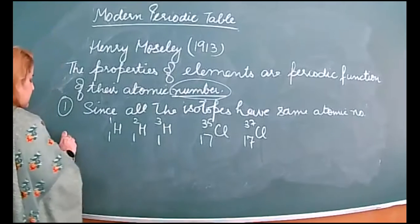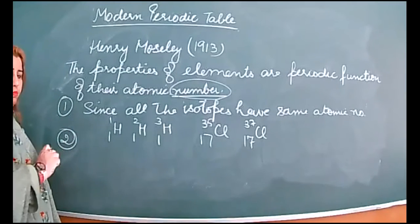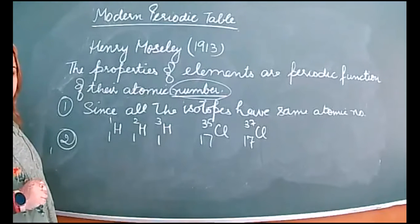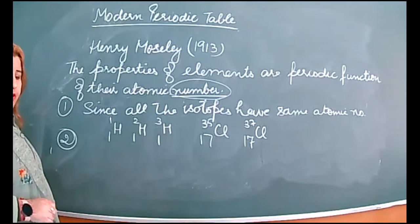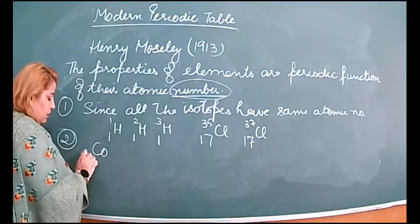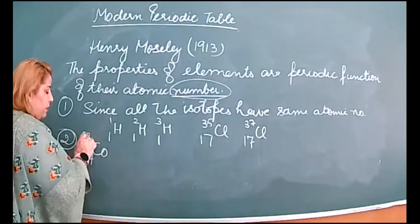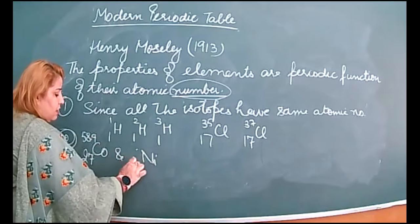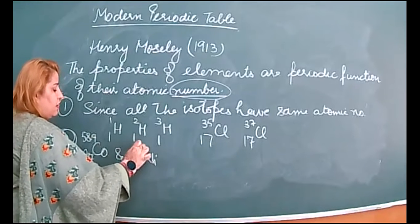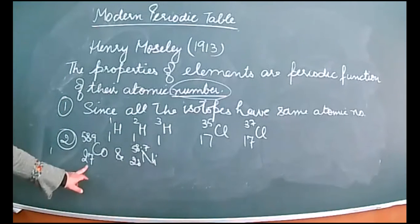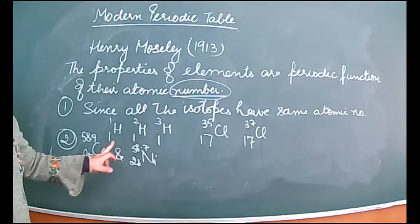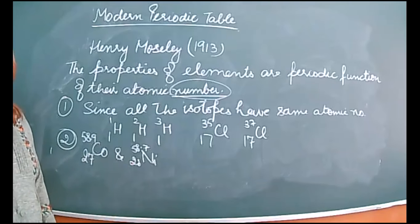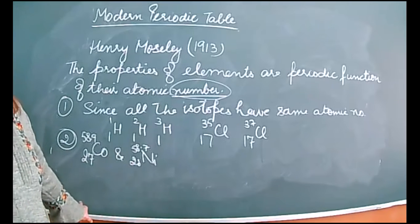The second anomaly was the problem of cobalt and nickel. Cobalt has an atomic mass of 58.9 and nickel has 58.7, but the atomic number of cobalt is 27 and nickel is 28. This problem was also resolved using atomic numbers.